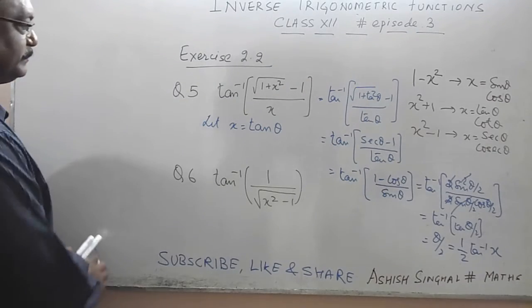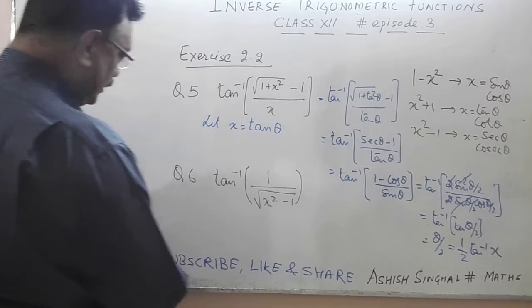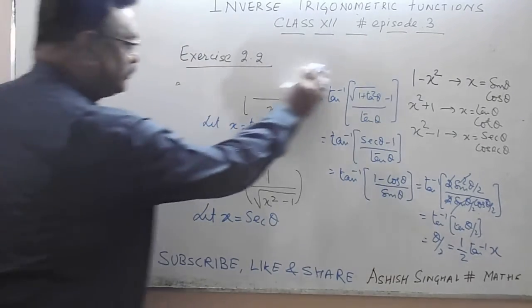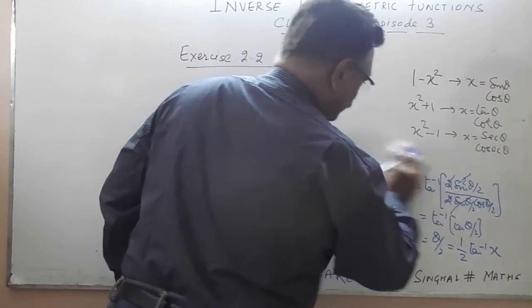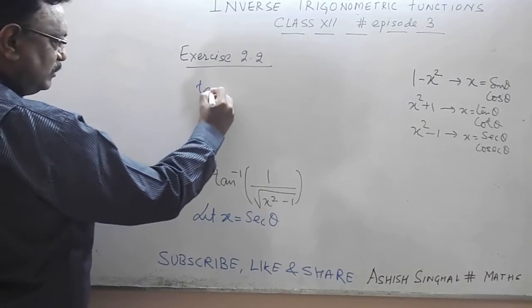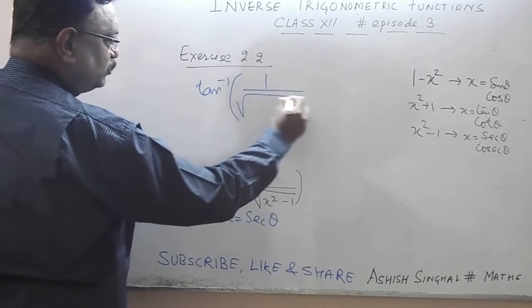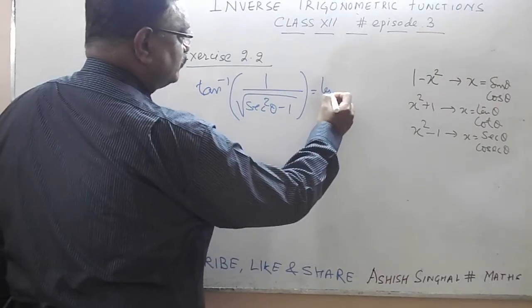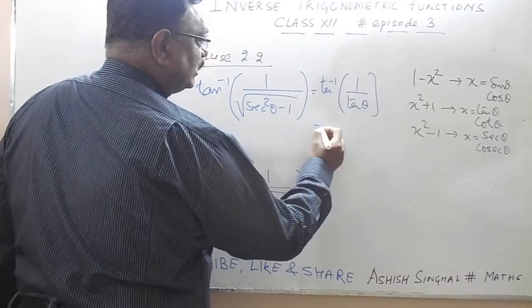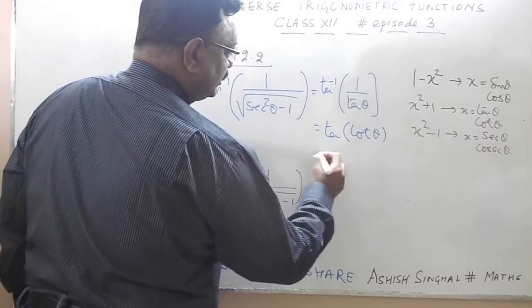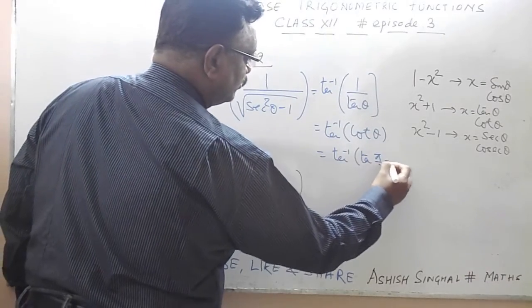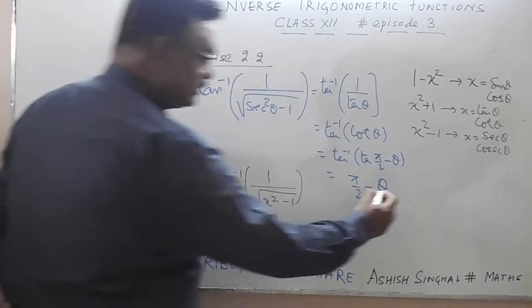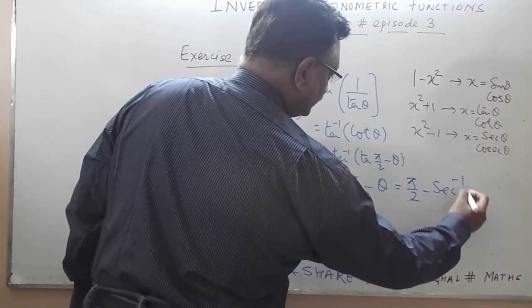Moving on to Question 6: tan inverse of 1 / √(x² − 1). Here we substitute x = sec θ. Substituting, we get tan inverse of 1 / √(sec²θ − 1). Since sec²θ − 1 = tan²θ, this becomes tan inverse of 1/tan θ, which is cot θ. And cot θ = tan(π/2 − θ), so the simplified form is π/2 − θ = π/2 − sec⁻¹x.